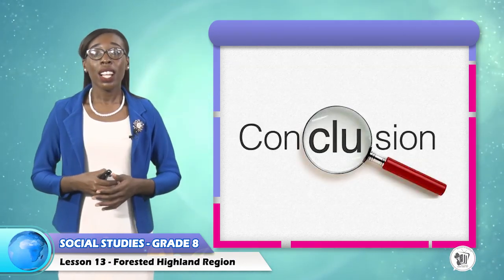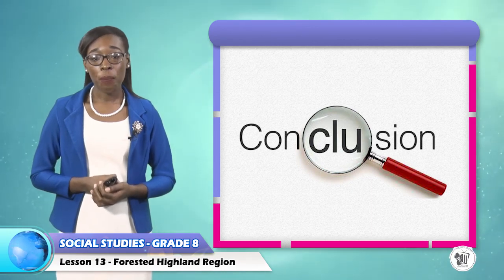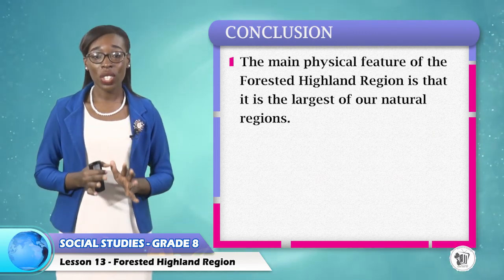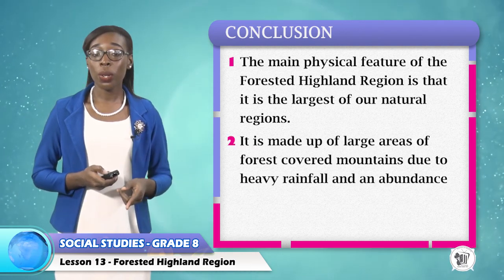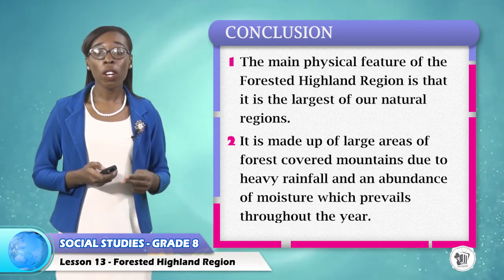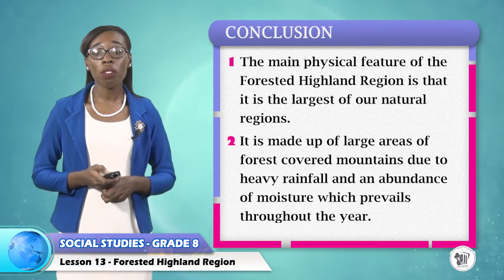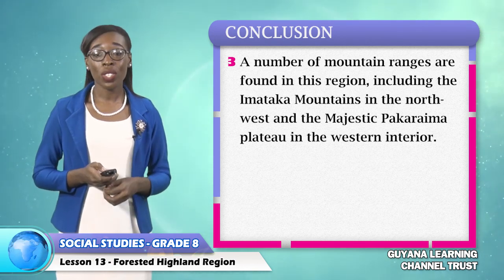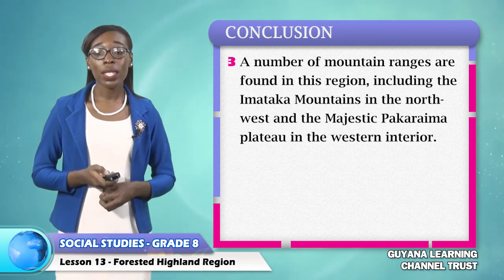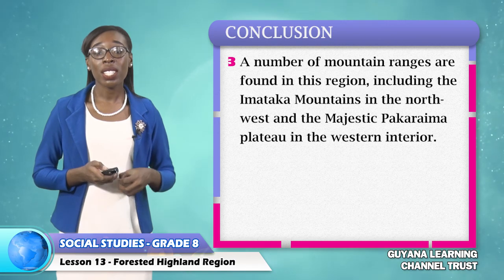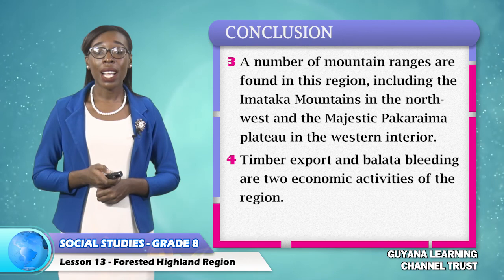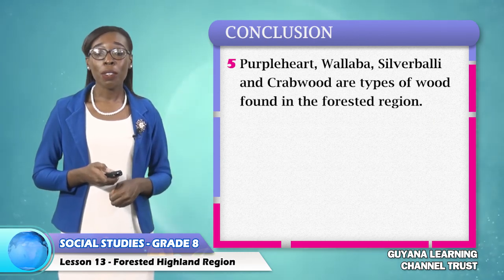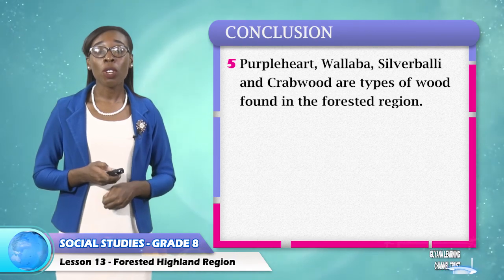In wrapping up today's lesson, let us recap the main points we learned today. One, the main physical feature of the forested Highland region is that it is the largest of our natural regions. Two, it is made up of the largest area of forest covered mountains due to heavy rainfall and an abundance of moisture which prevails throughout the year. Three, a number of mountain ranges are found in this region, including the Imataka Mountains in the northwest and the majestic Pakarayma Plateau in the western interior. Four, timber export and balata bleeding are two economic activities of the region. Five, purple heart, wallaba, silver valley, and crabwood are types of wood found in the forested region.